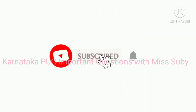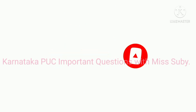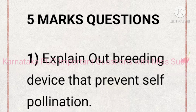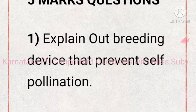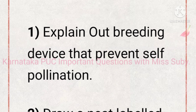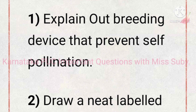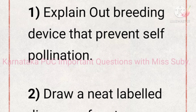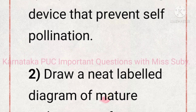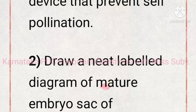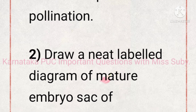Before we start, please subscribe to my channel and hit the bell icon to get more important videos like this. The first 5-mark question is: explain the outbreeding devices that prevent self-pollination.